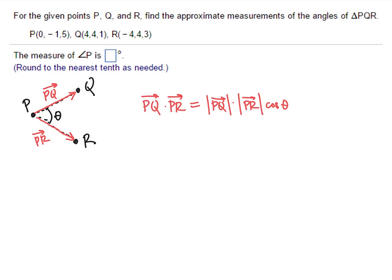So if we can find those two vectors PQ and PR, then we can take the dot product, and then we'll know all of the numbers in this equation except for the cosine of theta. We'll solve for the cosine of theta, use inverse cosine to get theta itself, and that's our strategy.